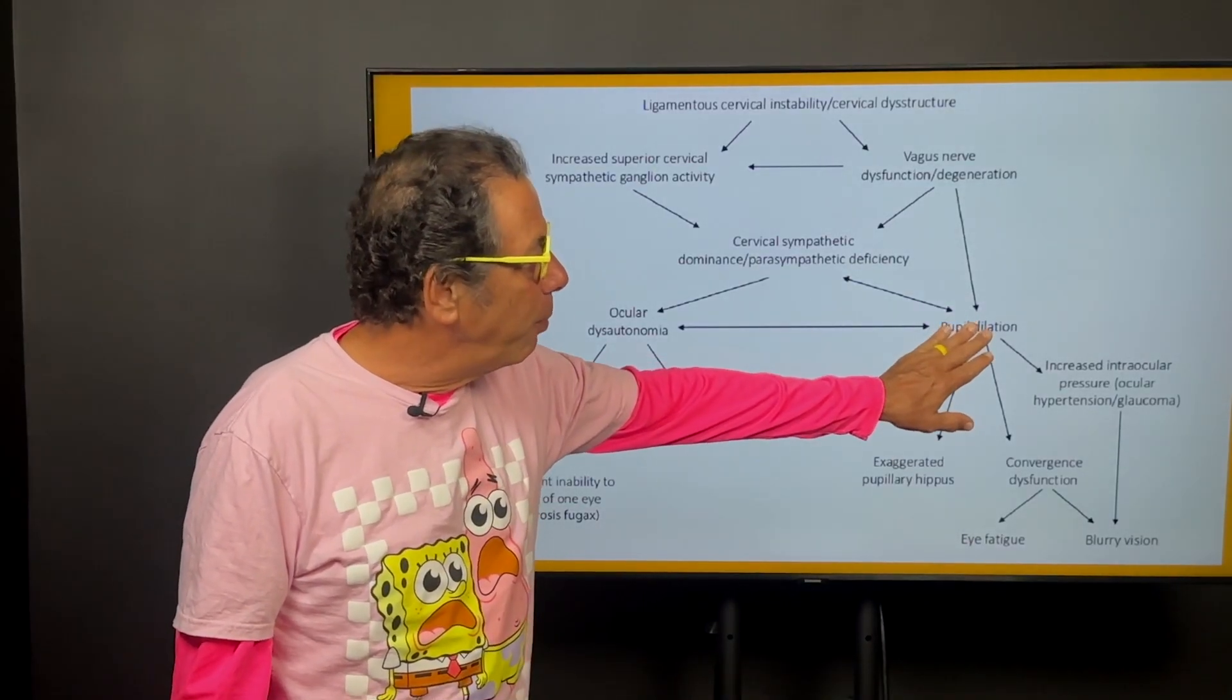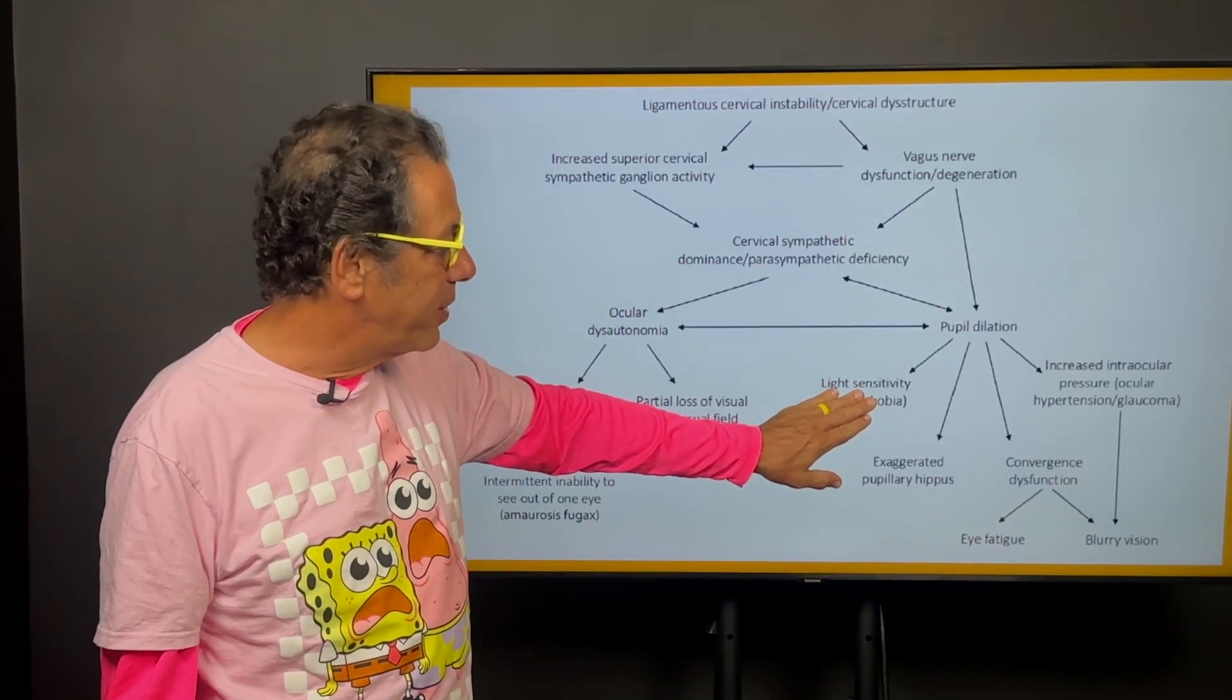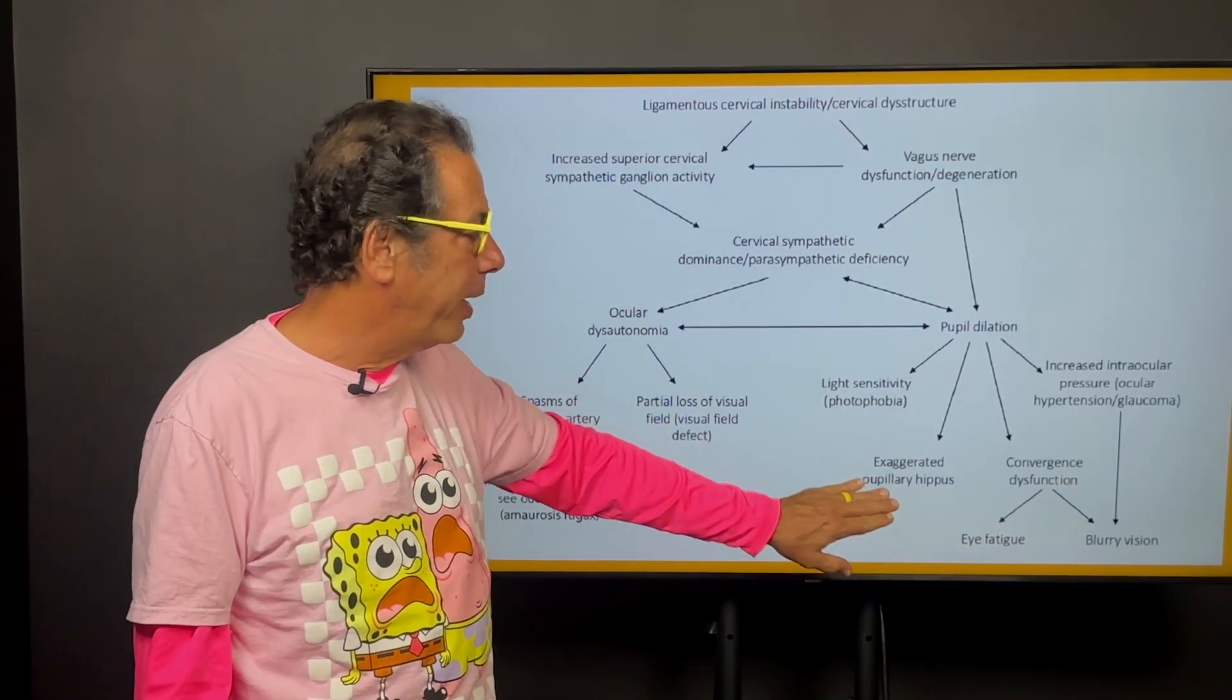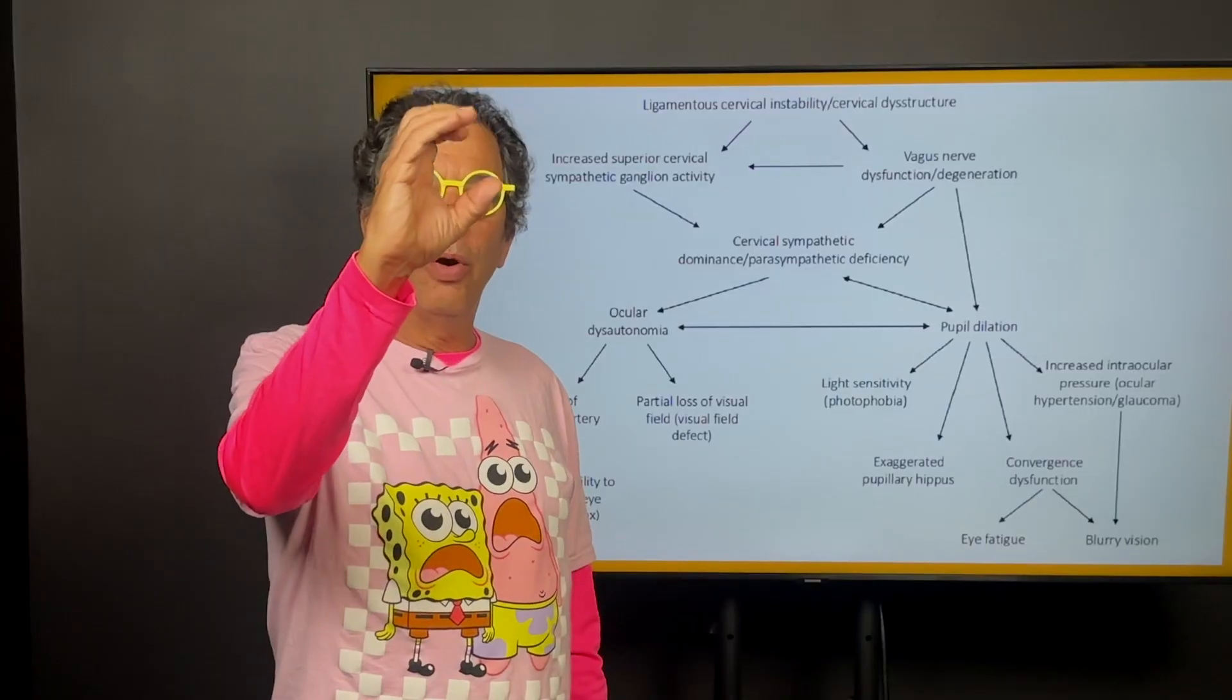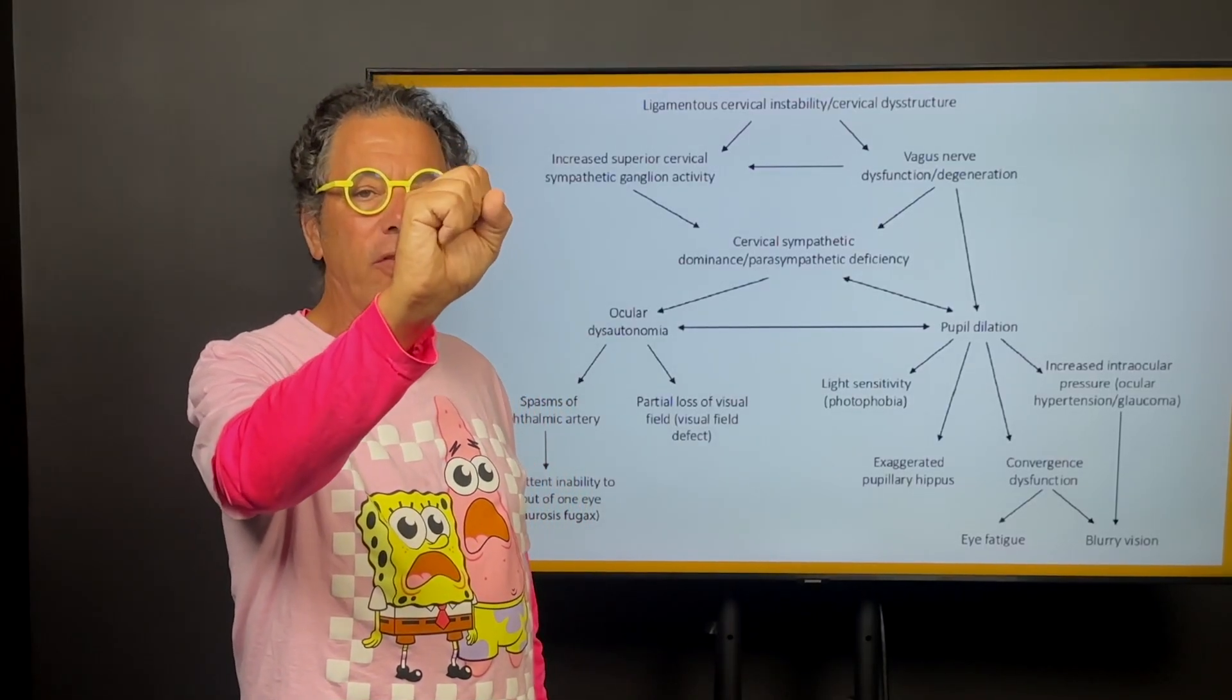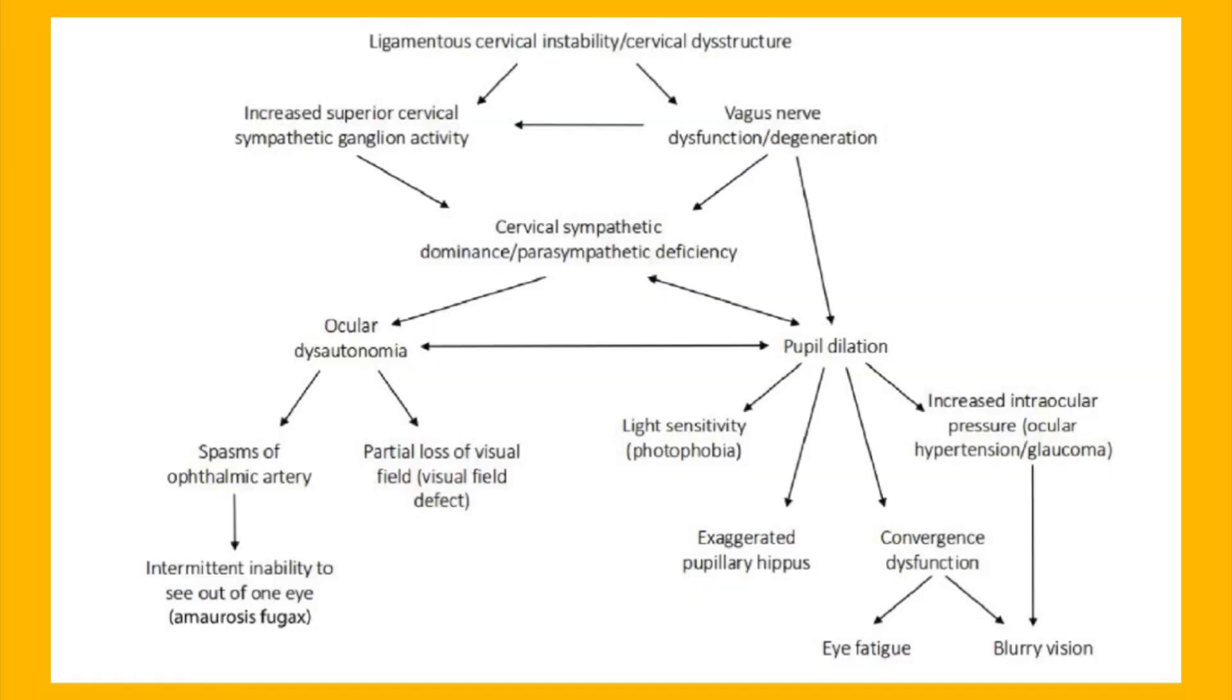So excessive pupil dilation often causes light sensitivity called photophobia. Occasionally I will see somebody where the pupils go like this, that's called pupillary hippus. That's part of the same process. You can get blurry vision, eye fatigue and of course the eye pressure can go up.